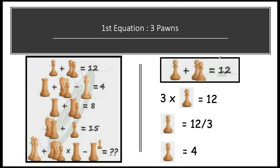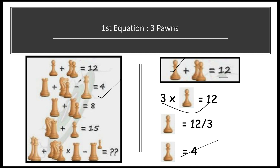In the first equation, three pawns sum to 12. Solving: 3 × pawn = 12, so pawn = 12 ÷ 3 = 4. From the first equation, we get pawn = 4.